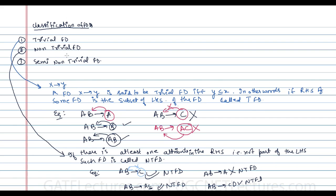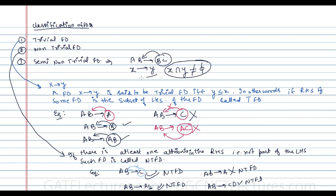We generally use trivial and non-trivial; semi-non-trivial we don't use, but roughly: if we have a functional dependency like AB determines BC, where some part of the right-hand side is common with the left-hand side, it is called semi-non-trivial. That means if X determines Y and X intersection Y is not equal to phi, then it is called a semi-non-trivial functional dependency.